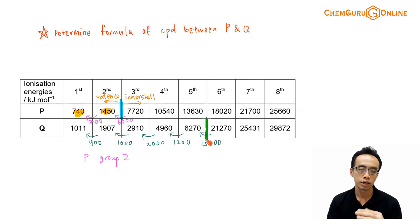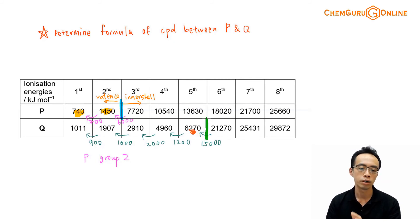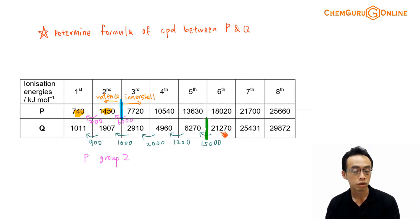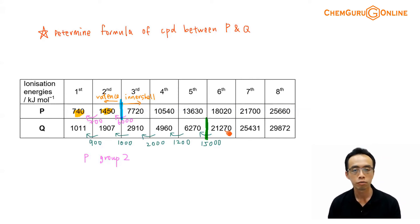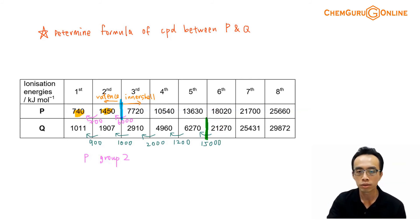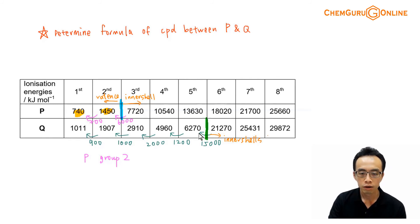Why are we interested in this big jump? Electron number five has an ionization energy of about 6000 something kJ per mole. Electron number six requires a significantly larger amount of energy to remove. This tells me that electron number six is from an inner shell, and electron number five is from a valence shell. If an electron is much closer to the nucleus, there is a stronger attraction, and it requires a lot more energy to remove it — hence the ionization energy is significantly higher. So electron number six for Q is an inner shell electron.